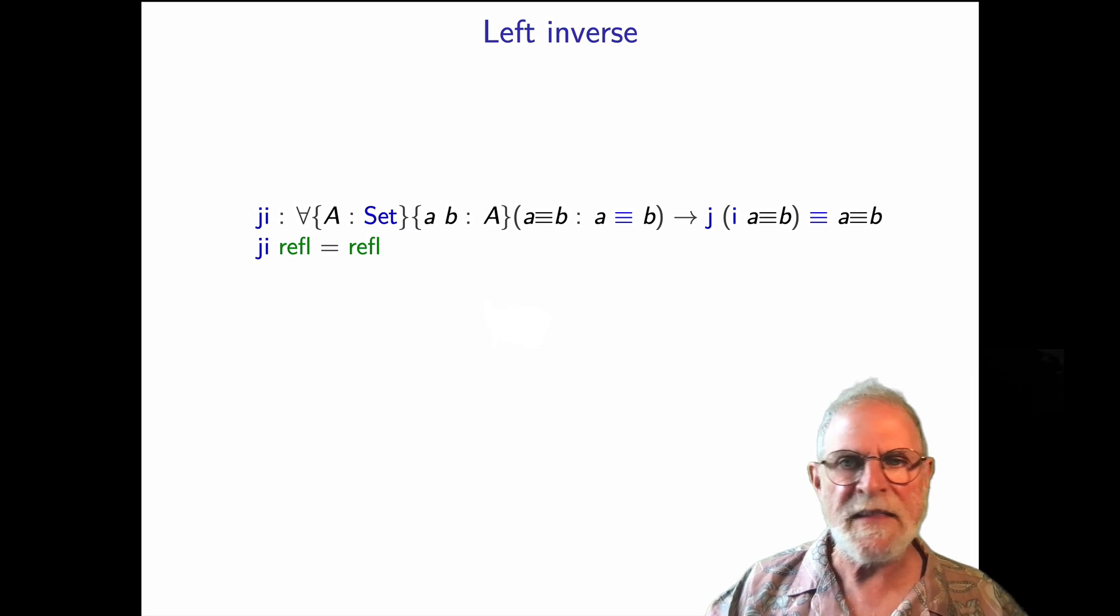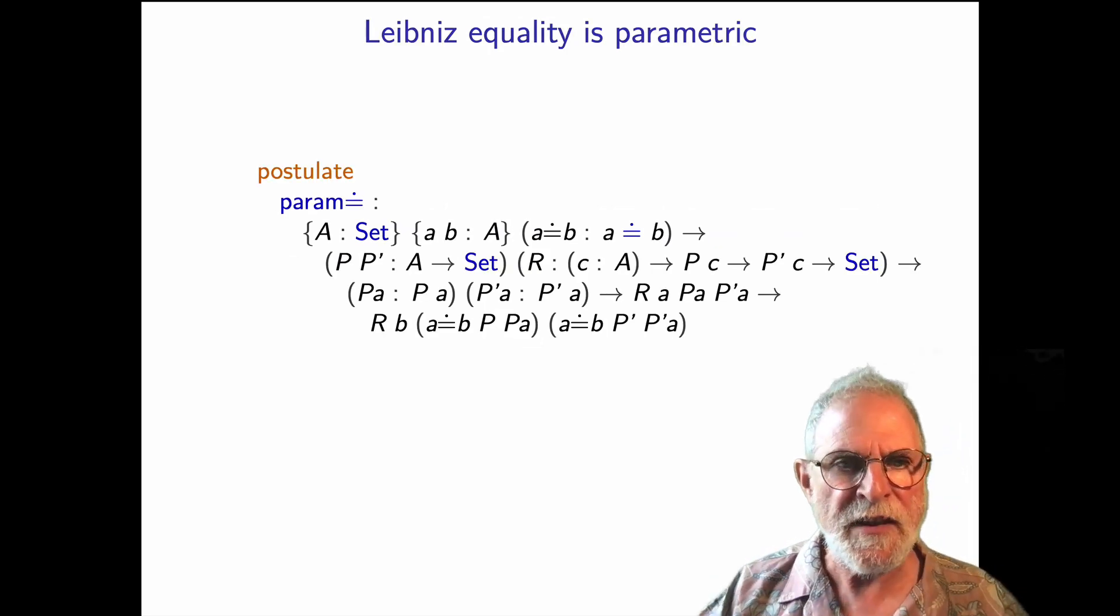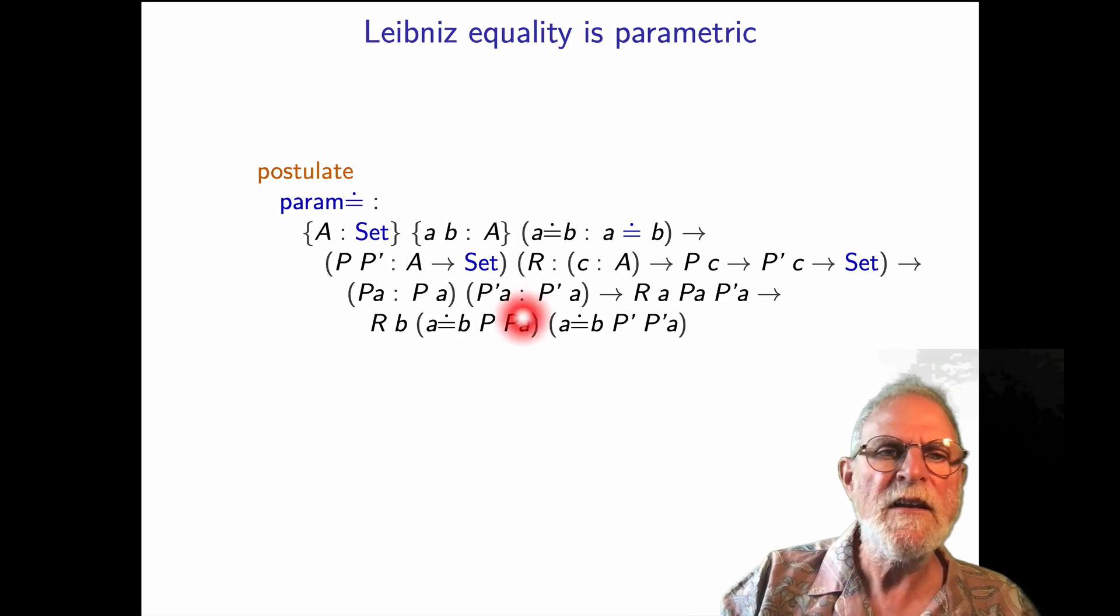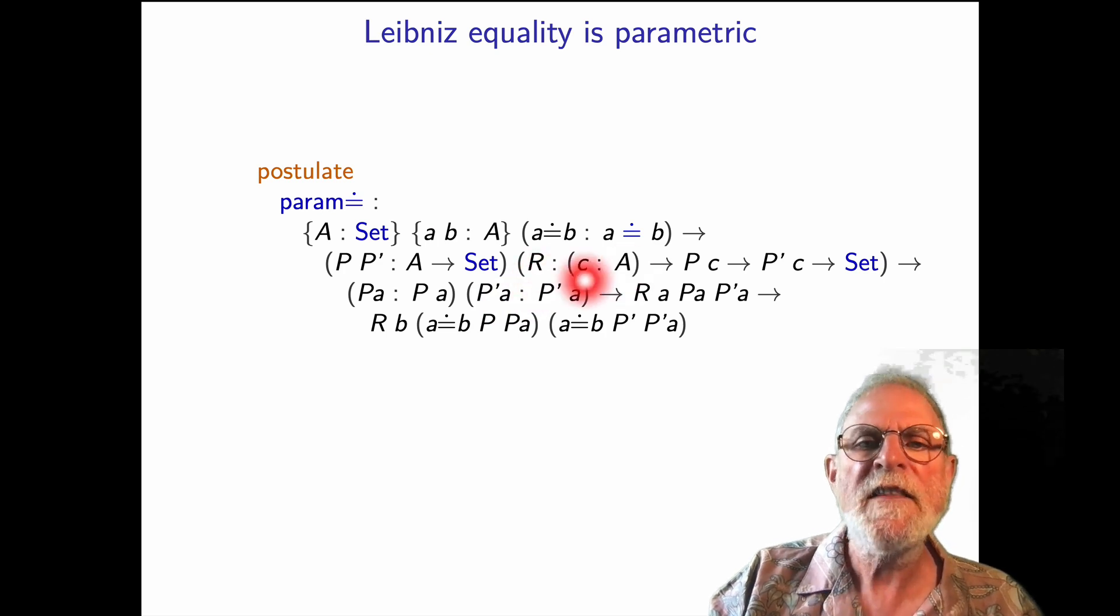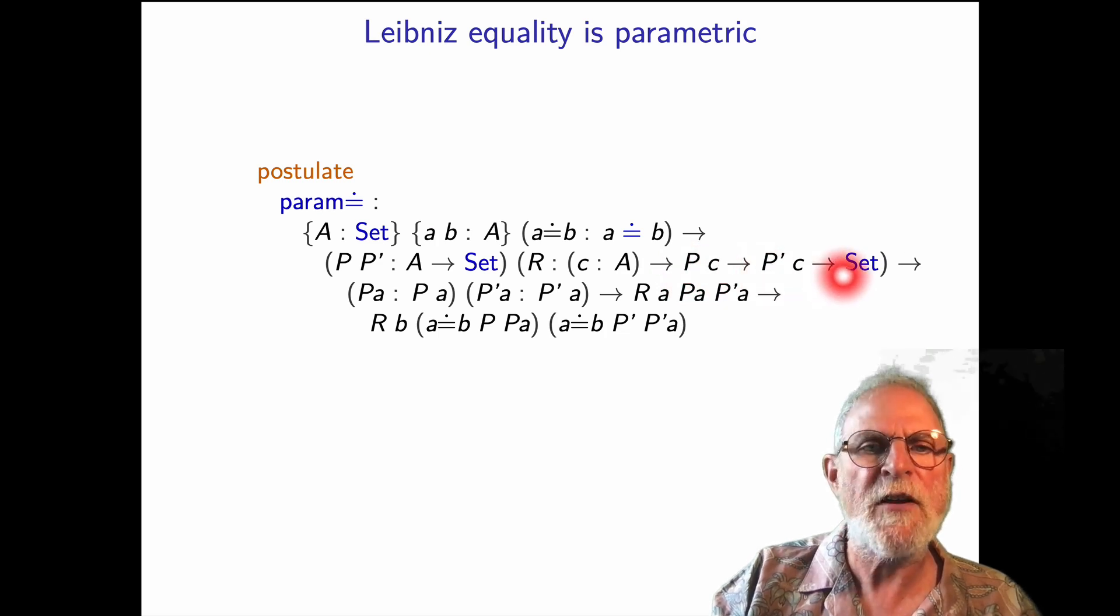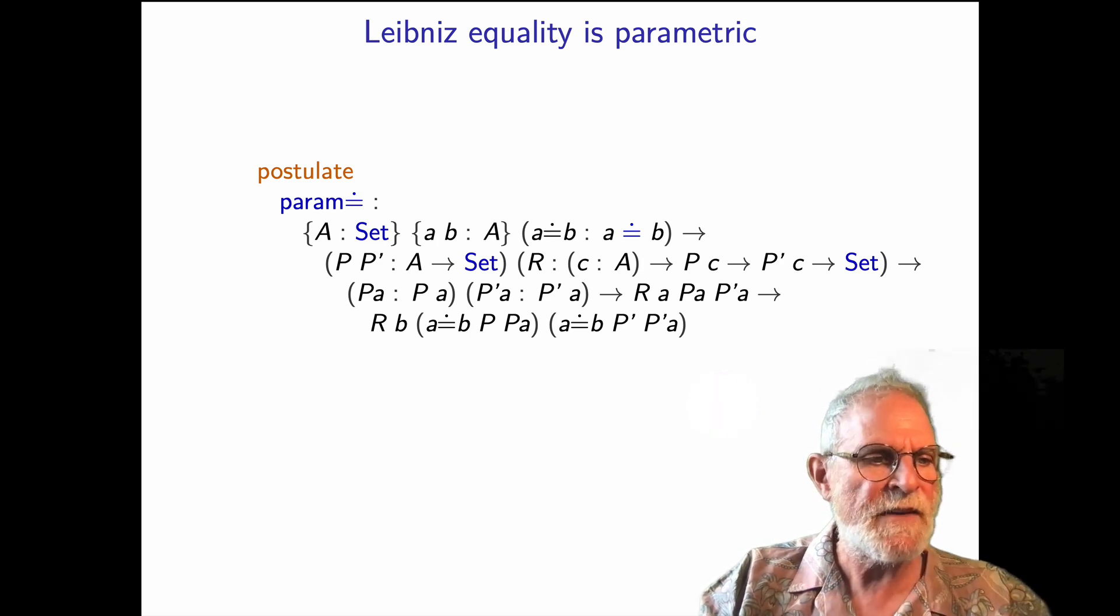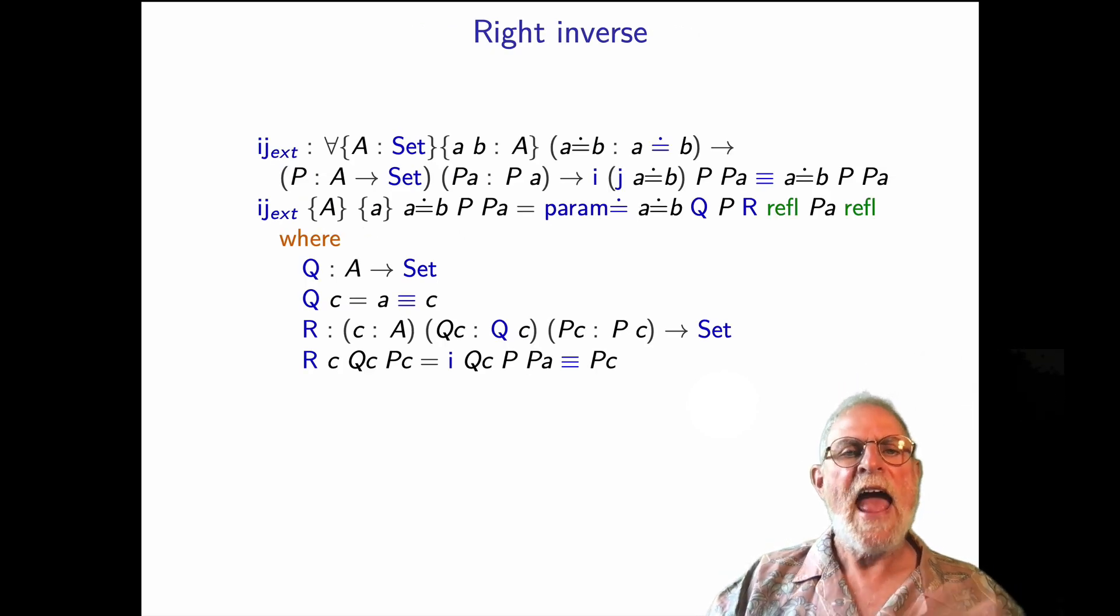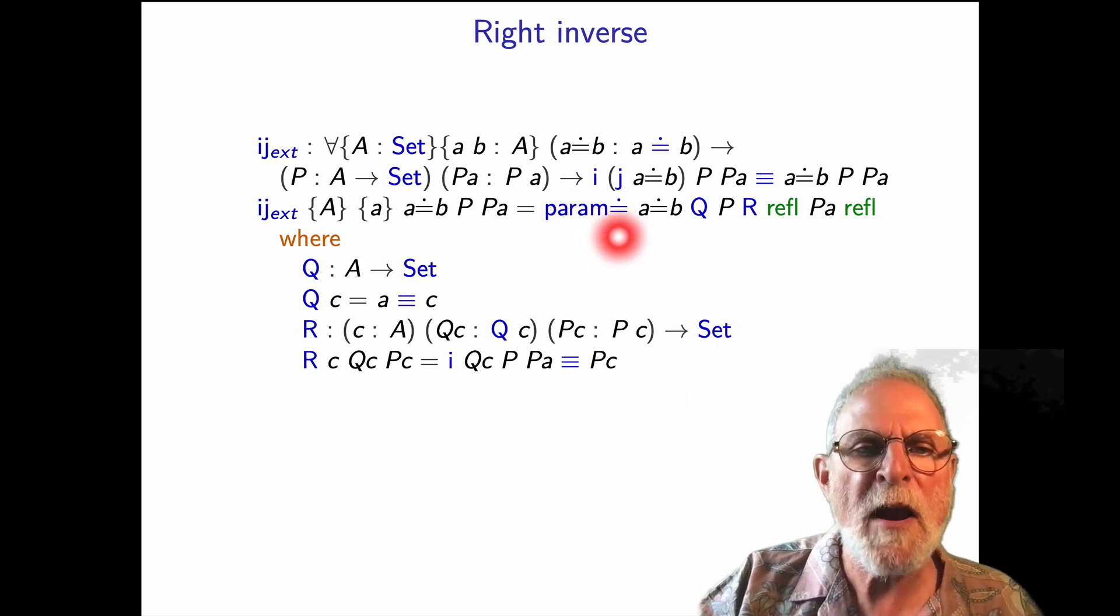Left inverse just follows immediately by simplification. Very easy. To show right inverse, we need parametricity. So here's the theorem for free that corresponds to the type of Leibniz equality. So our for all P now becomes for all P and all P prime. And all relations R that for an arbitrary c of type A gives evidence that P of c and P prime of c are related. And then similarly for the rest, I won't go through that in detail and find the technical details in the paper.